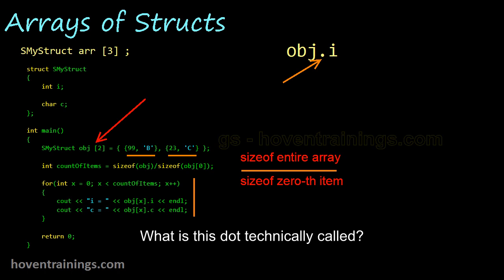What is this dot technically called? The C++ standard refers to it as dot operator. It is also called member selection operator.